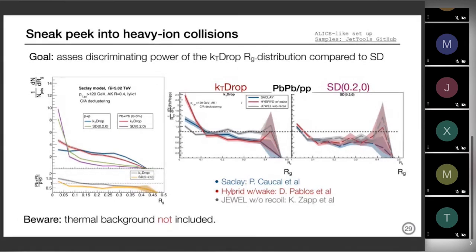We did a Monte Carlo study where we take the R_g distribution for three different jet quenching Monte Carlos — JEWEL, SCET-G, and the Hybrid Model — and compute the R_g distribution in pp and in Pb-Pb. We want to maximize the difference between Pb-Pb and pp. We do this for kt drop and for soft drop with the values used by ALICE. Taking the ratio between Pb-Pb and pp, for soft drop the three different jet quenching Monte Carlos barely differ. For the kt drop R_g distribution, you see a huge difference among them — this would be a model killer if it was measured.